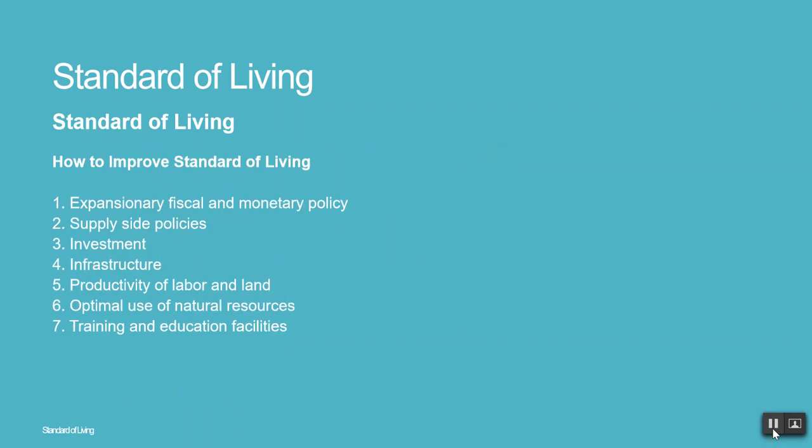How to improve standard of living: 1. Expansionary fiscal and monetary policy. 2. Supply side policies. 3. Investment. 4. Infrastructure. 5. Productivity of labour and land. 6. Optimal use of natural resources. 7. Training and education facilities.